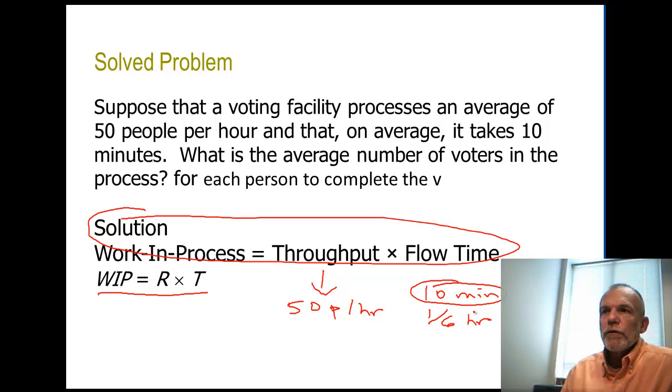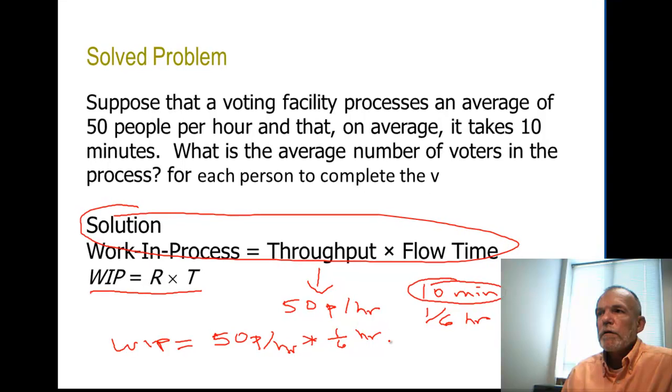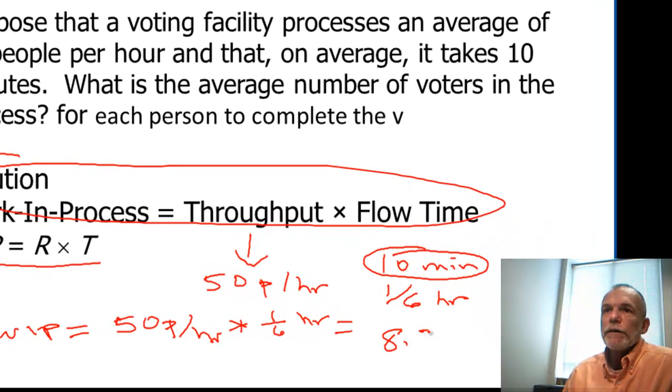And so in this case we're given throughput in time, we're really solving for the work in process: what's the average number of voters in the process? So our work in process or inventory would be 50 people or voters per hour times 1 sixth of an hour, and that would give us 8.33 people on average. Notice that the units of measurements for hours cancel and we're left with people.